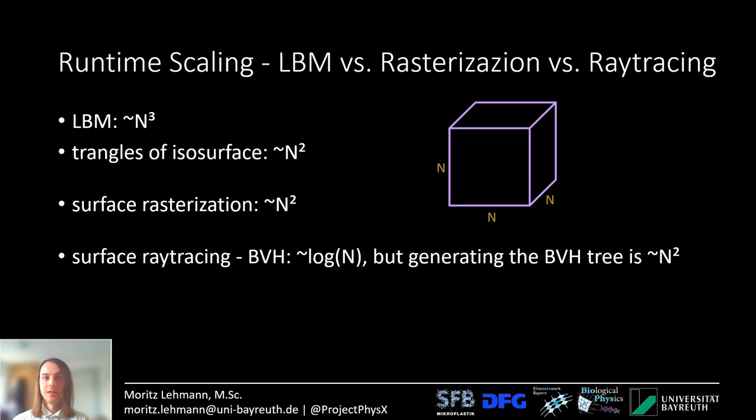For ray tracing there are two different approaches. The first is the bounding volume hierarchy, which itself scales with approximately log(n). However, unfortunately a fluid surface is moving — so for every new simulation step you have to redo the entire BVH tree — and this has to loop over all the triangles again, which is about n².